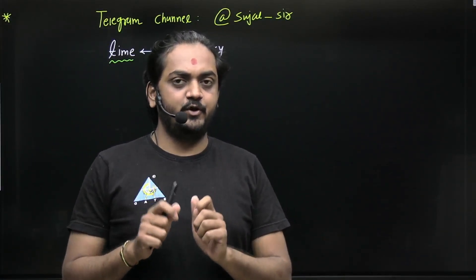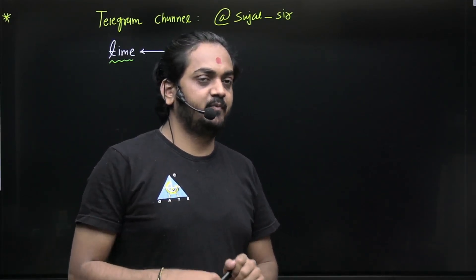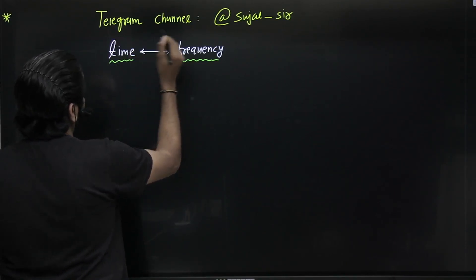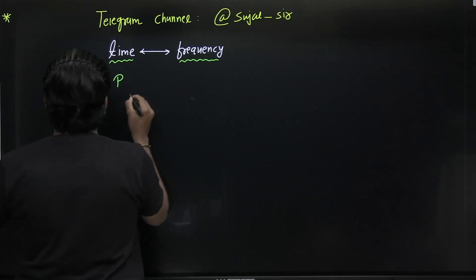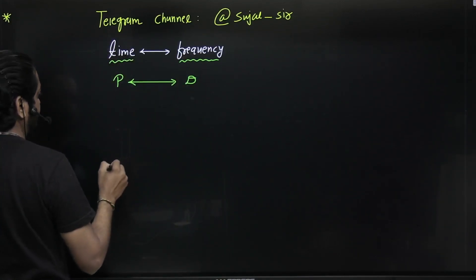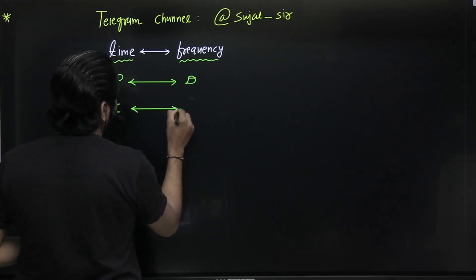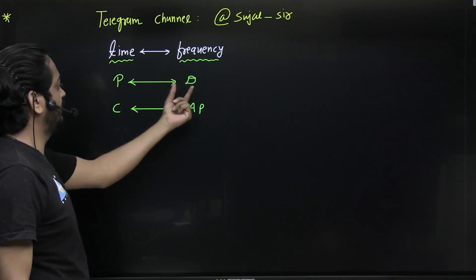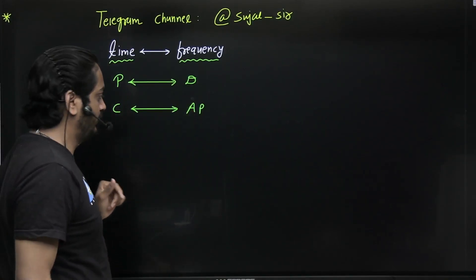In this video I will explain how to remember the Continuous Time Fourier Series formula easily. First, remember these points: a signal in the time domain is being converted to the frequency domain. If a signal is periodic in the time domain, it will be discrete in the frequency domain. If it is continuous in one domain, it will be aperiodic in the other domain, and vice versa.